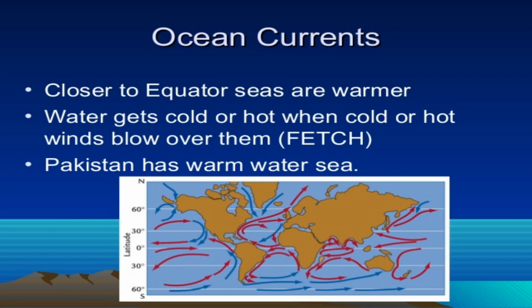If oceanic currents did not distribute this heat, the summers and winters at the equator as well as at the poles would be far more extreme than what we currently observe. Oceanic currents help the equator divide its heat equally to other regions in both winter and summer. Therefore, oceanic currents are one of the most important factors affecting our climate.